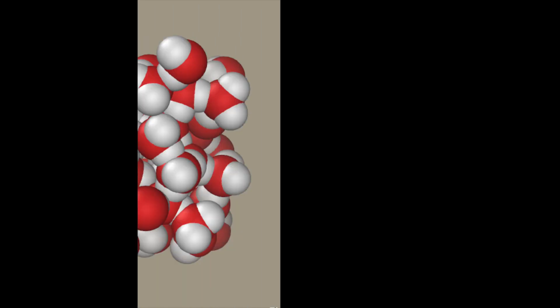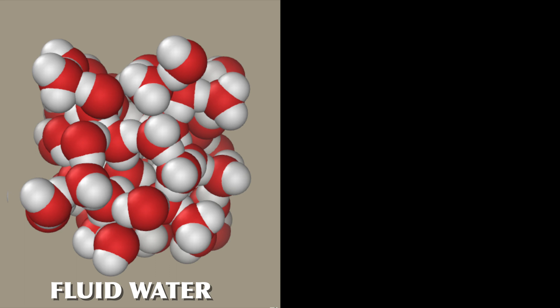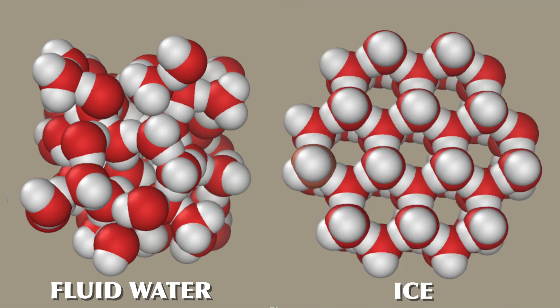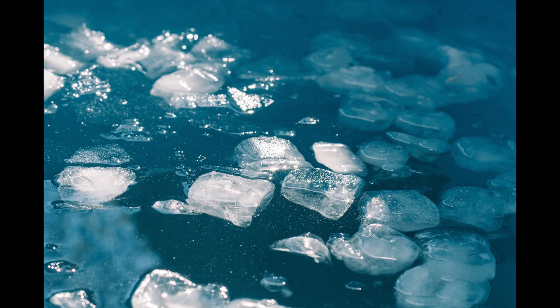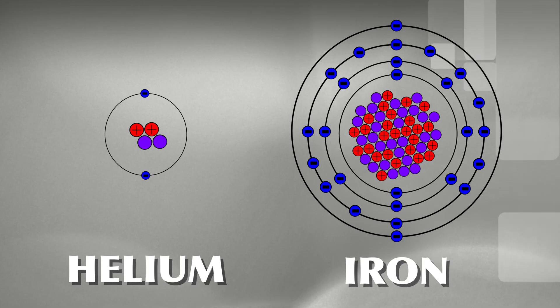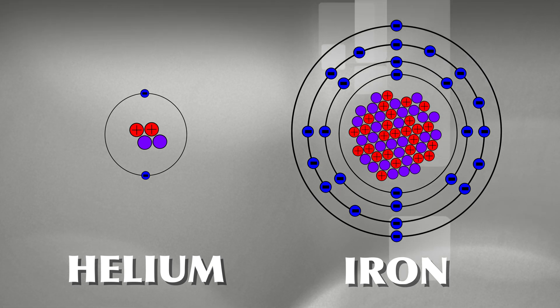For example, these are water molecules in fluid form, and these are water molecules in solid form, also known as ice. We can see that the regular crystal pattern of ice has large gaps, and thus less mass per volume — so the density of ice is lower than the density of water, and that is why ice floats on water. How massive an atom is depends on how many protons and neutrons it has, so it's the same basic principle: more mass per volume.